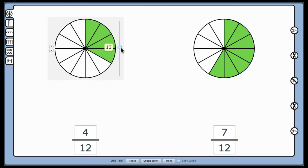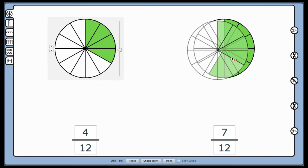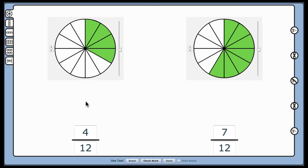Ask students if the circle on the left can be changed so that it is divided into twelfths. Have students predict the amount of parts that would be shaded, and move the slider next to the model on the left to create the model, matching their predictions.